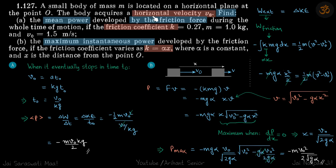We have a block that is given a horizontal velocity v₀. It's kept on a rough surface, and we need to find the mean power by the friction force and maximum instantaneous power. The friction coefficient varies with the distance as αx. In the first part, friction coefficient is constant, so let's say it stops in time t₀.